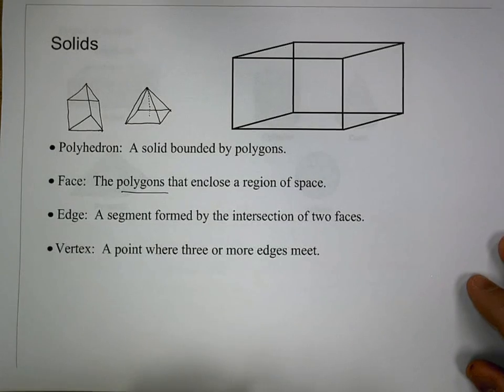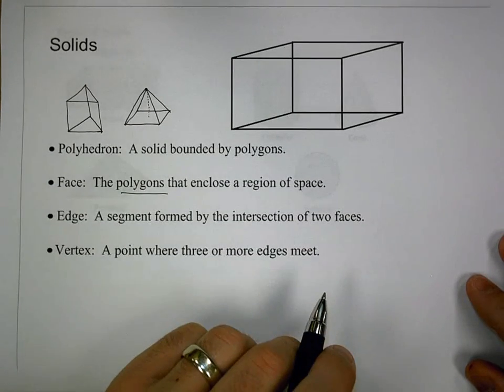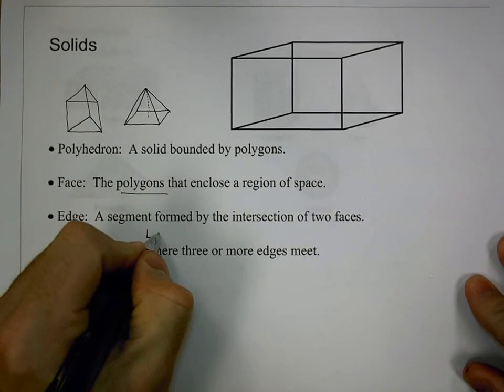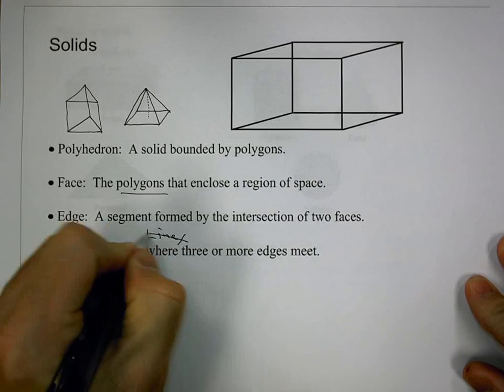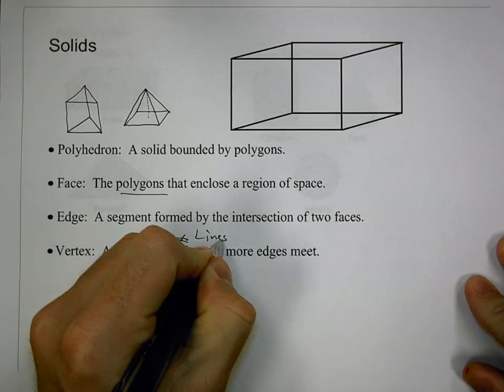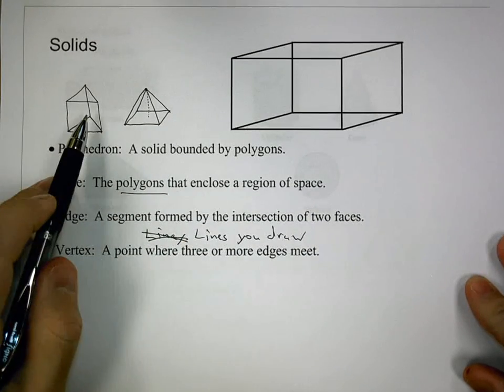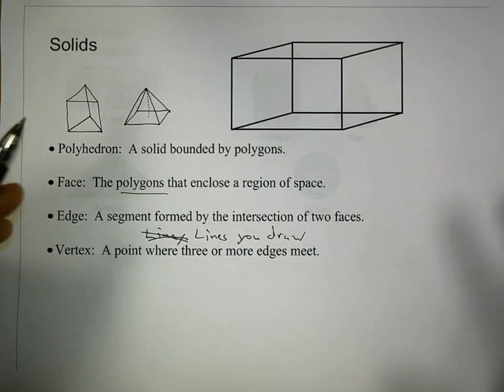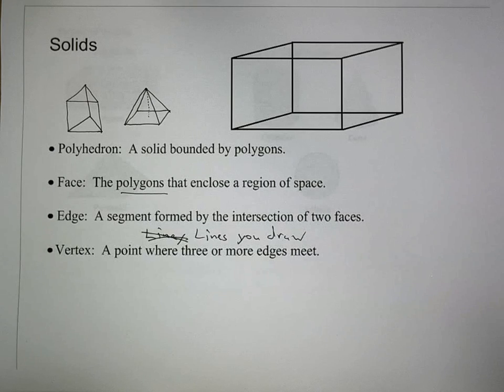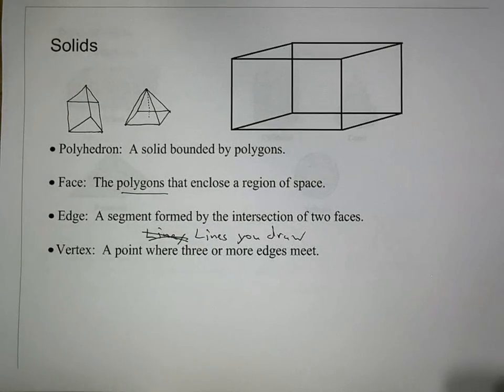We have the edge, which is the segment formed by the intersection of the two faces. Well, we could also think of that as the lines you draw. As I drew these objects, I was drawing the edges. I don't actually draw the face because it's the edge that kind of defines what that face is. If I was to draw a rectangle, I'm drawing the lines, the edges to the outside, inside of it is the rectangle. So, the lines you draw are the edge.